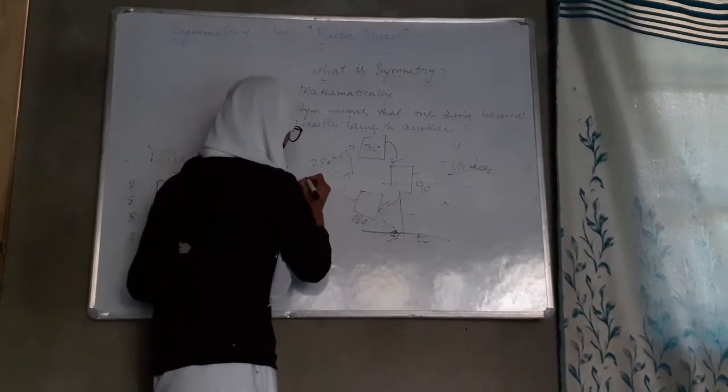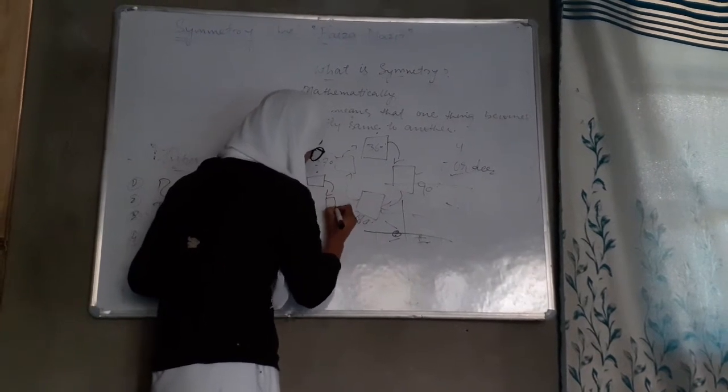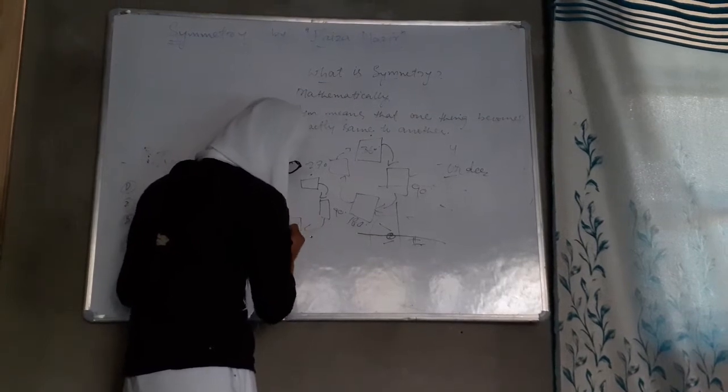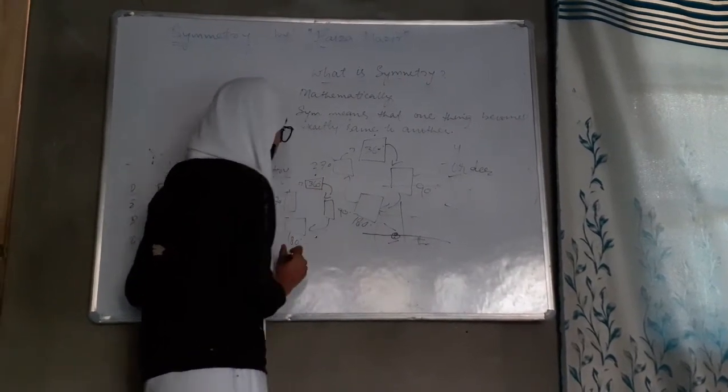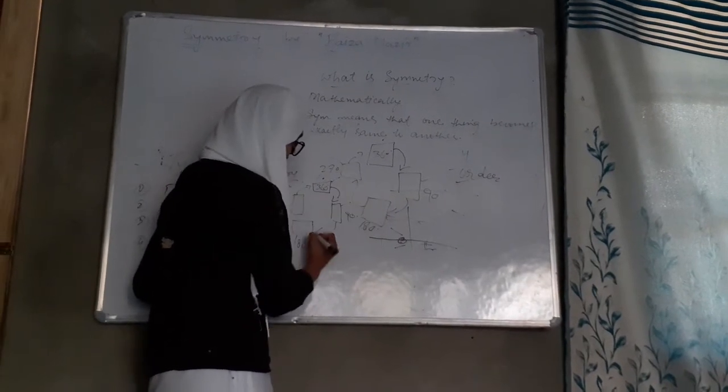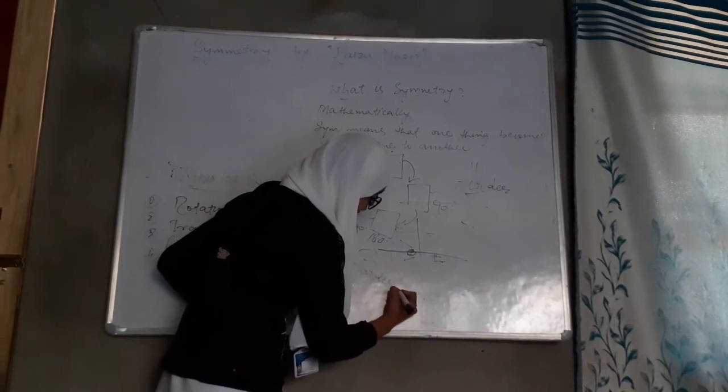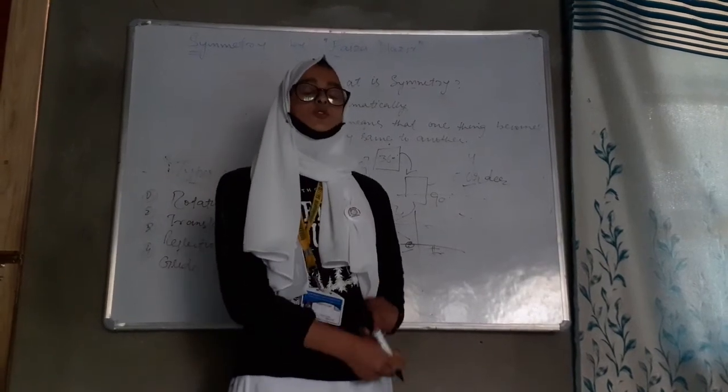Rectangle. This is zero, 90, 180, 270, and then 360. So it appeared here one time, two times. So it can be written as order 2. This is called the order of symmetry. Thanks for your patience.